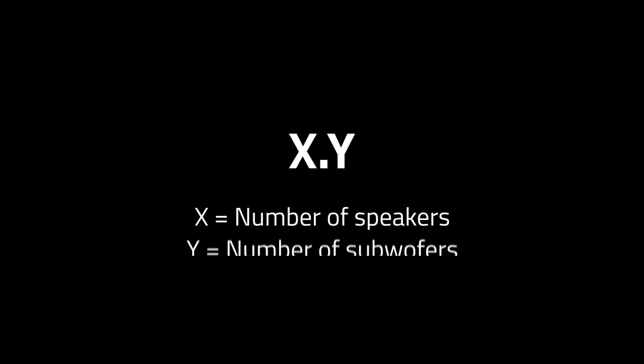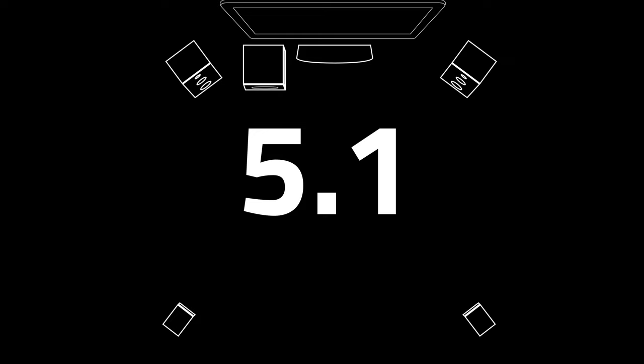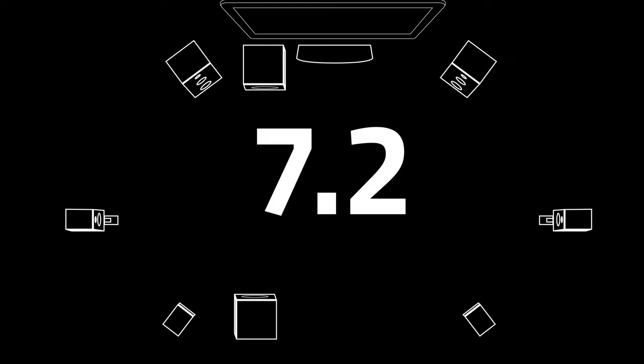Surround sound configurations are expressed in a number-dot-number format, where the first number is the number of speakers and the second is the number of subwoofers. 2.0, for example, is two speakers and no subwoofer. 5.1 is five channels — usually two in the front, a center, and two rears — and a subwoofer. 7.2 is seven channels and two subwoofers, and so on.